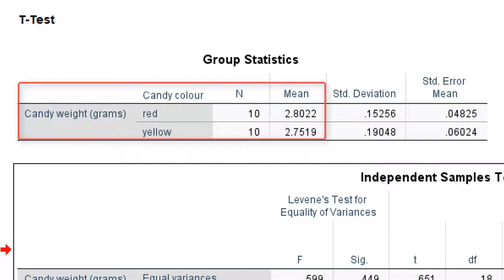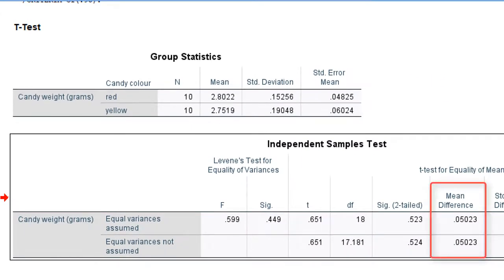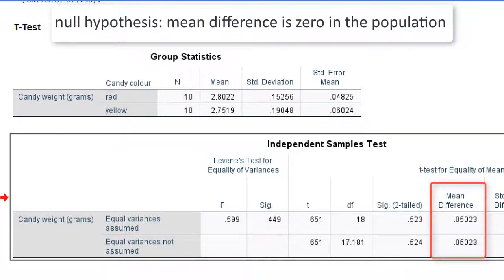The mean difference in our sample is reported in the independent samples test table. The null hypothesis states that the difference is 0 in the population. Subtracting the hypothesized value 0 from the mean difference that we observe in the sample does not change the result. So, the mean difference in our sample actually is the unstandardized effect size.